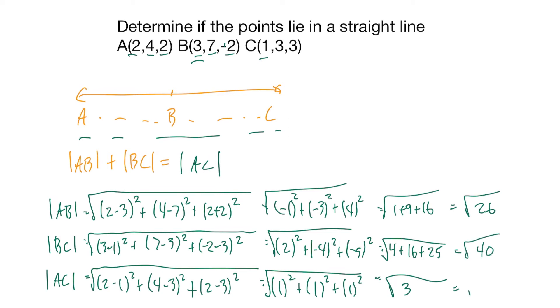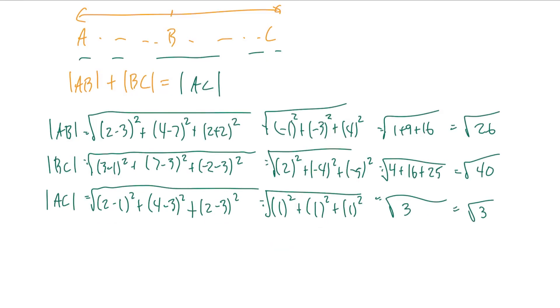And to check if they do line a straight line, since 40 is our biggest value, it will be our C, and then these can be our A and B because it is the longest length.